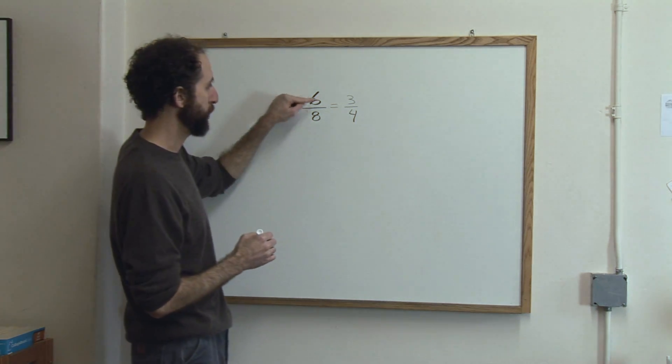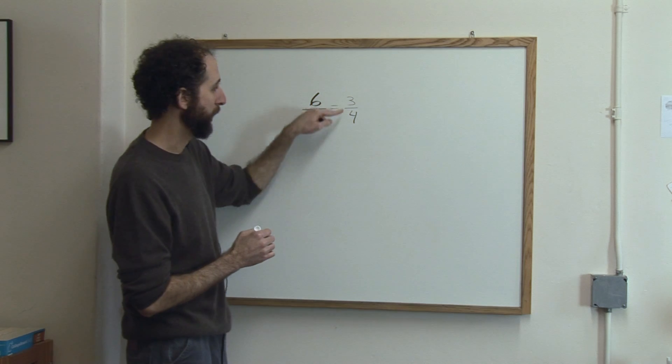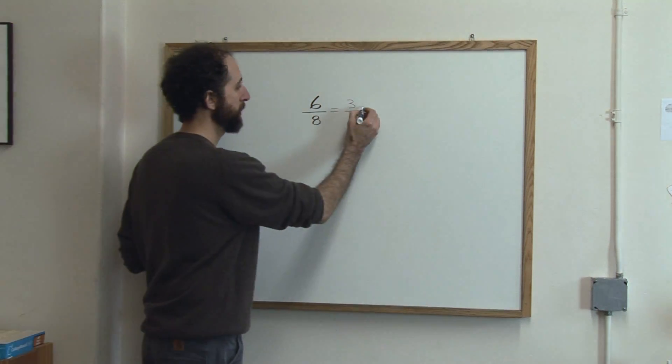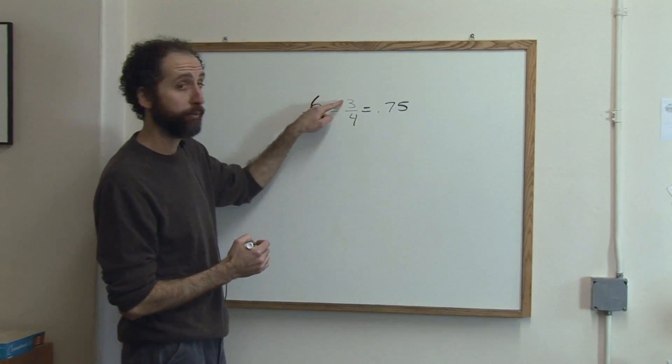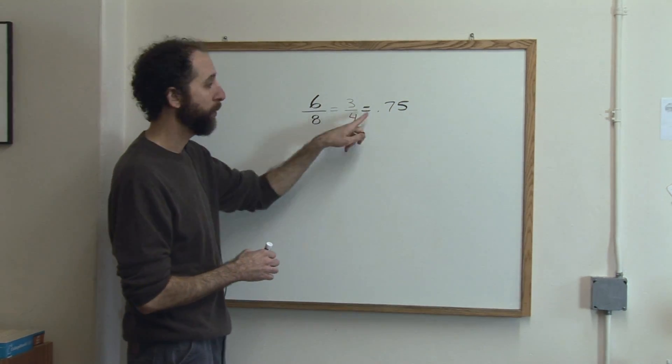If I divide 6 by 2, I get 3. 8 by 2, I get 4. So I get 3 fourths. And 3 fourths is 0.75. Again, if you had done 6 divided by 8 or 3 divided by 4, you'd also get 0.75.